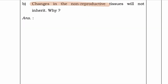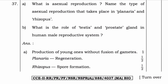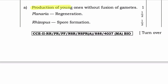Changes in the non-reproductive tissues will not be inherited. Answer: because changes in non-reproductive tissue cannot be passed on to the DNA of germ cells. Next question: What is asexual reproduction? Name the type of asexual reproduction that takes place in planaria and rhizopus. Answer: Production of young ones without fusion of gametes is known as asexual reproduction. For planaria — regeneration; and for rhizopus — spore formation.